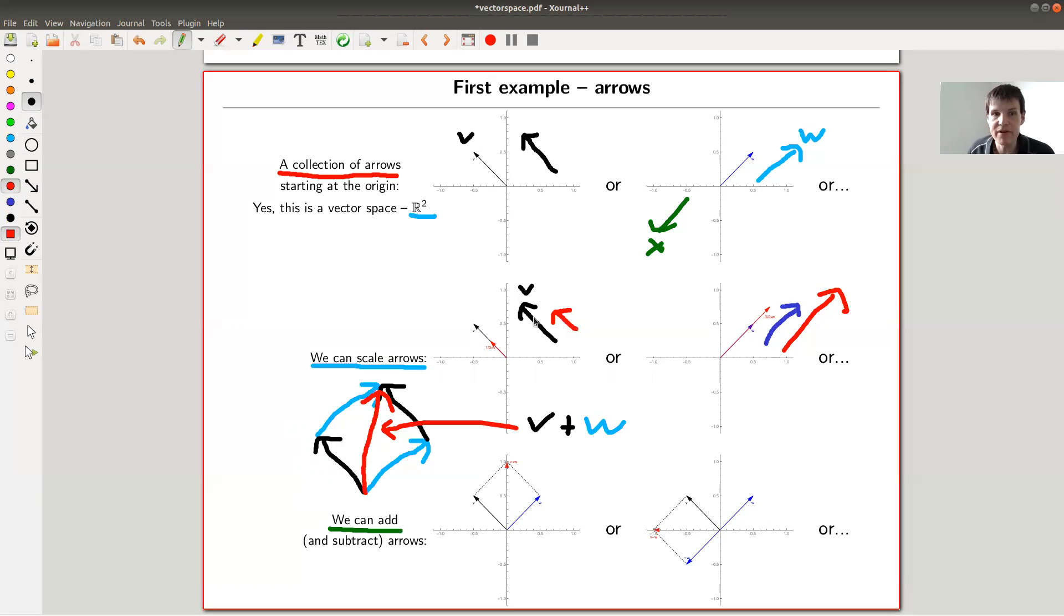In any case, really, the takeaway message is that we have three operations, three basic things: we have a collection of something, whatever the something is doesn't matter. We can scale whatever something is, and we can add whatever something is.